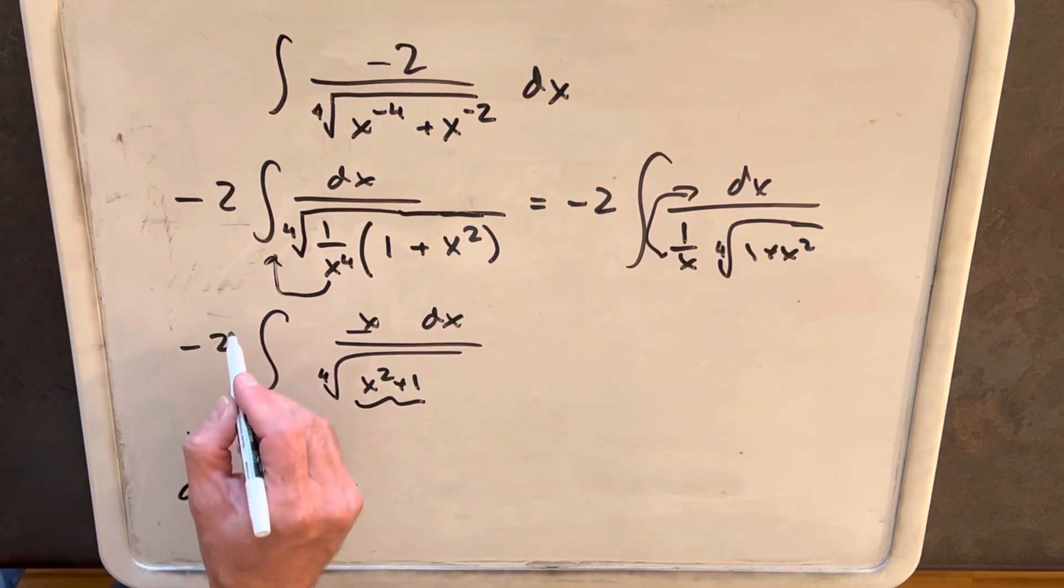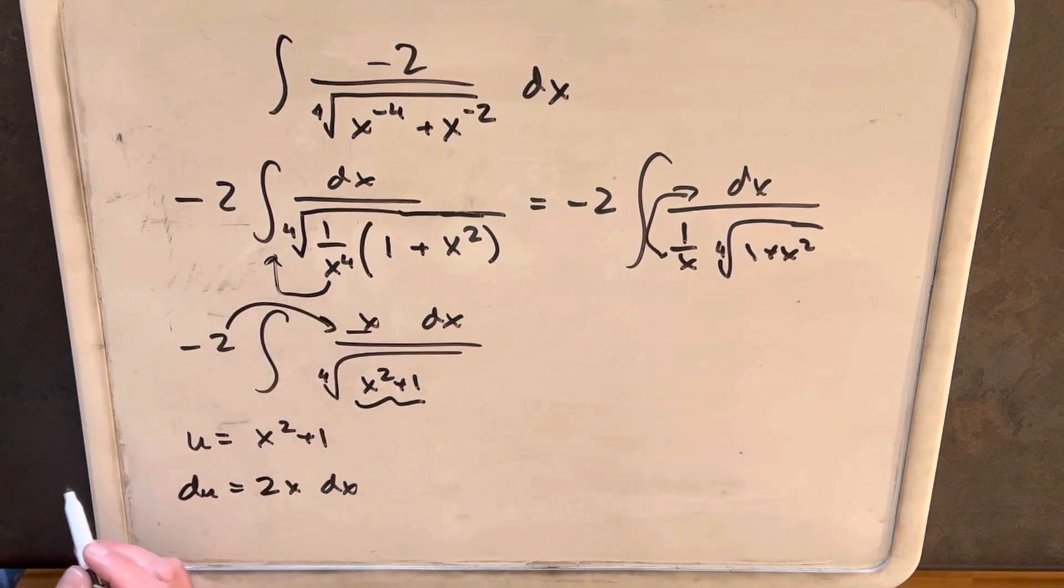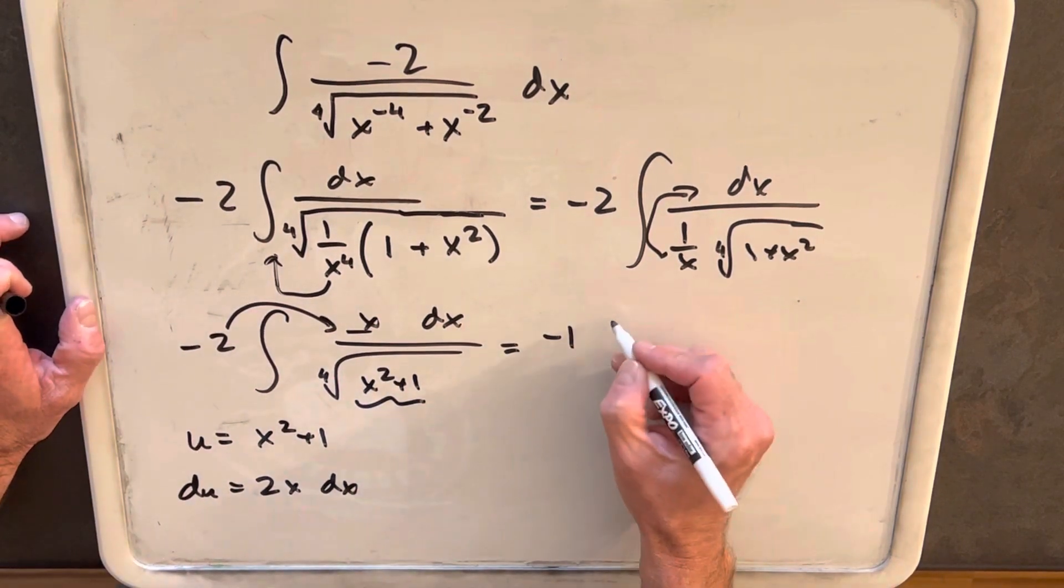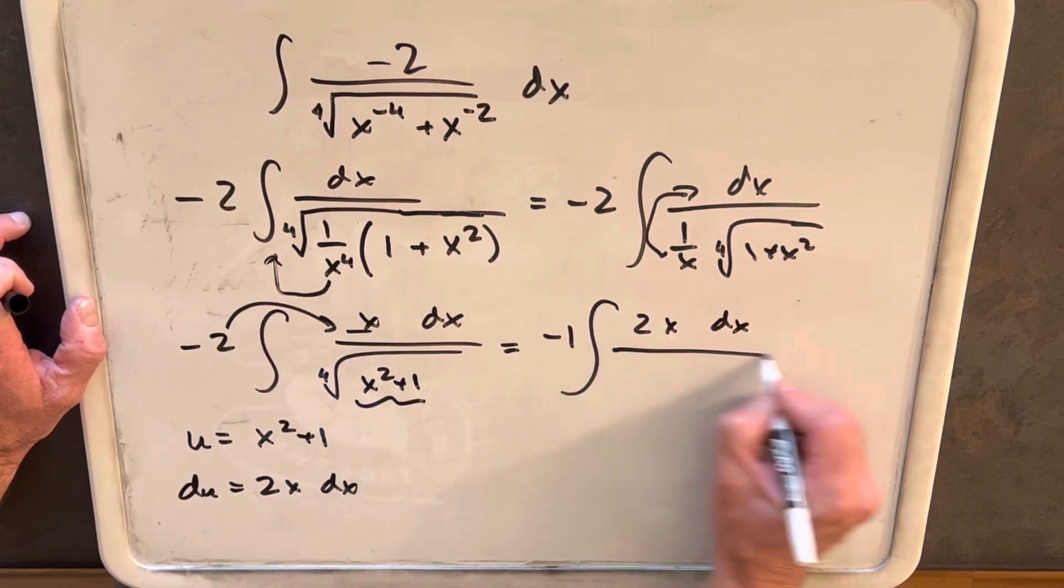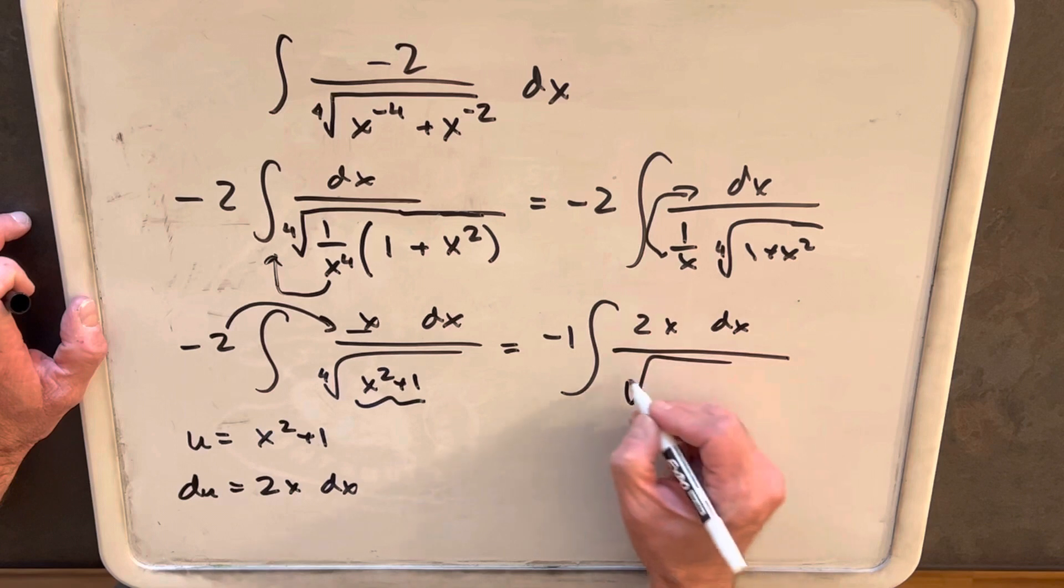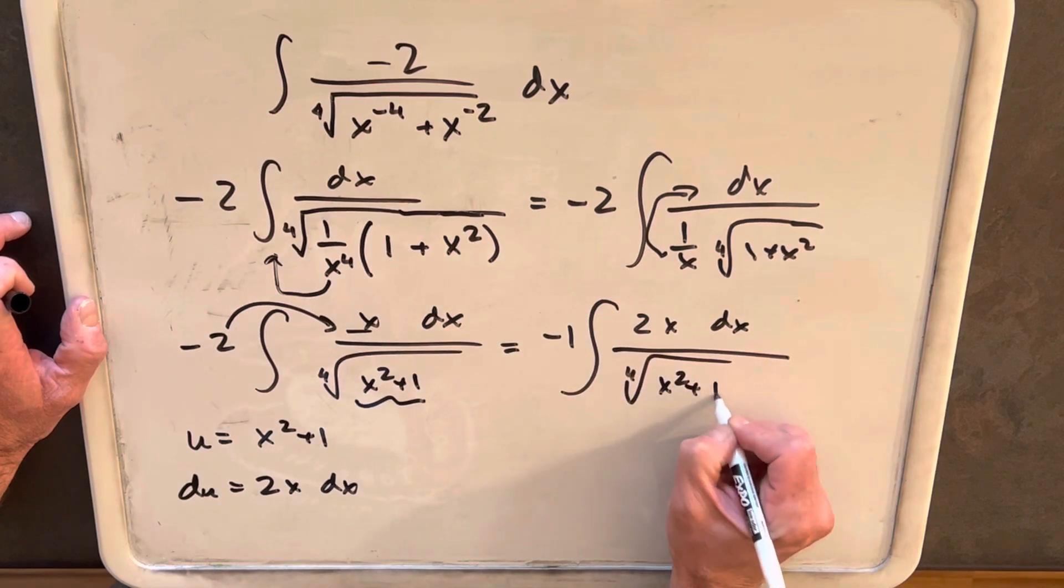What I can do is bring this 2 back. I should have left it there in the first place. So let's rewrite this with a minus 1 outside the integral, and we'll have our 2x dx in the numerator all over the fourth root of x squared plus 1.